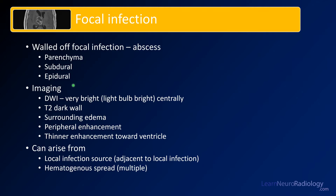The imaging findings of an abscess within the brain: it tends to be very bright, light-bulb bright, on diffusion. You can often have a T2 dark wall. You'll have peripheral enhancement, and there's this description of having thinner enhancement towards the ventricle — so if you see a ring-enhancing mass that's a little bit thinner on the ventricular side, that's characteristic.